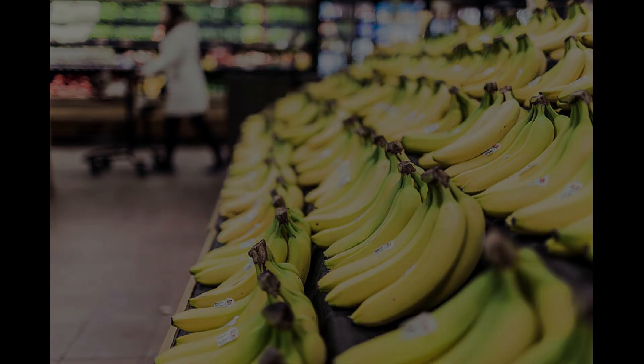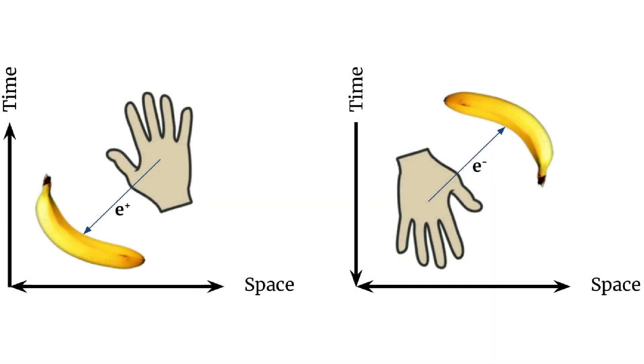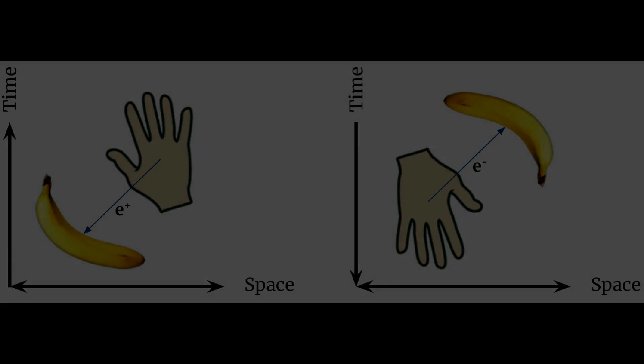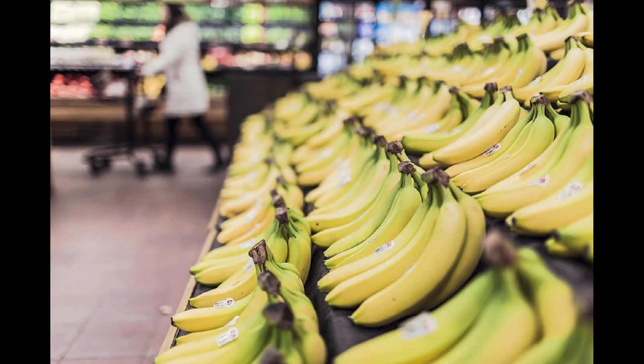Conventionally, we say the banana emits a positron which strikes our hand. But Ernst Stueckelberg and Richard Feynman would say it is an equally valid description to say our hand emits an electron that travels backwards through time to the banana. Under the Feynman-Stueckelberg interpretation, the banana receives a message from the future in the form of an electron sent back in time. If you've ever wanted to own a time machine, you need only visit your local grocer. See our episode, Is Time Travel Possible?